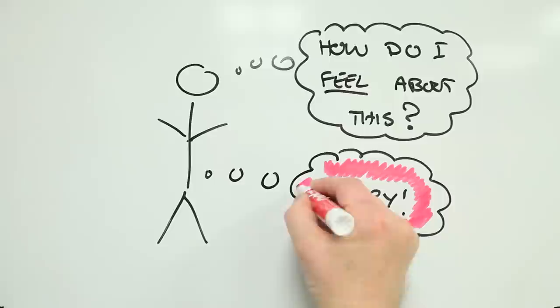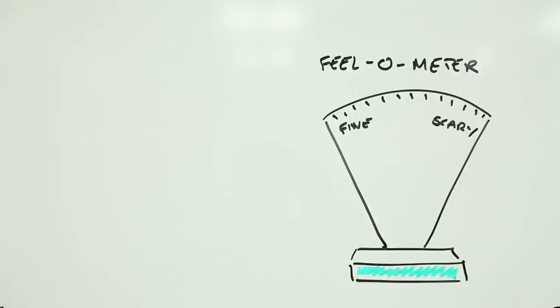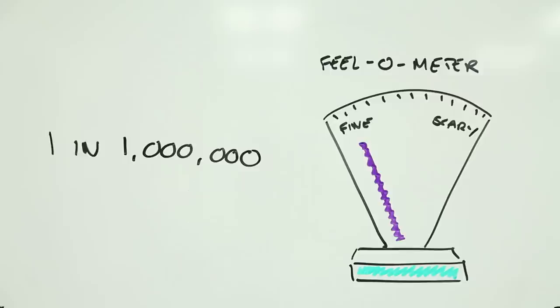I mean, a bad feeling's a bad feeling, right? Actually, no. There are many things that change how we feel about risks. Like what? Well, some of these are obvious. For example, if a risk is likely to occur, then we tend to feel worse about it than if it's unlikely to occur.